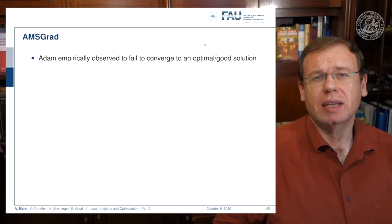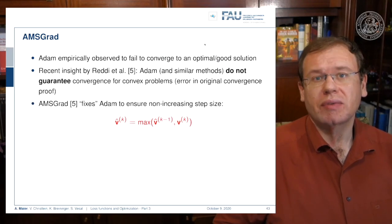Adam was empirically observed to fail to converge to optimal good solutions. In reference 5 you can even see that Adam and similar methods do not guarantee to converge for convex problems. There's an error in the original convergence proof, and therefore we suggest AMSgrad that fixes Adam to ensure non-increasing step size. You can fix it by adding a maximum over the momentum update term. So if you do this you result in AMSgrad.